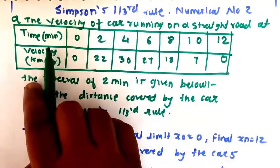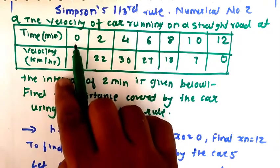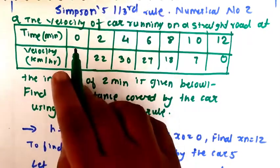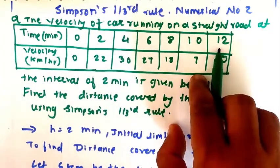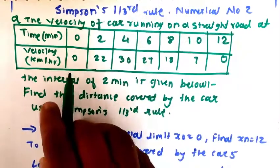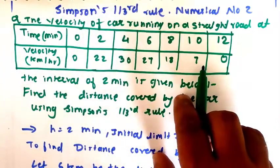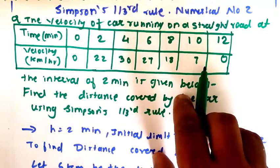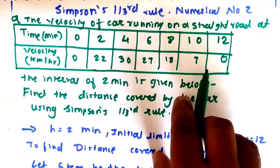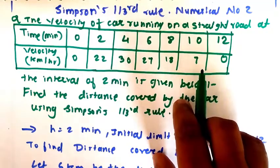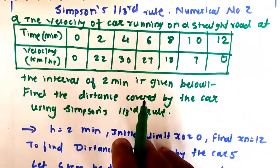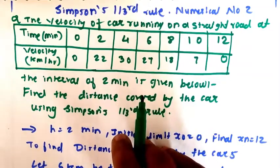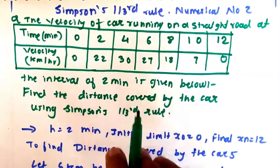Now what is given: time is given in minutes, starting from 0, so here x0 and xn. Velocity is also given. The number of iterations is 6, so n equals 6 in this numerical.